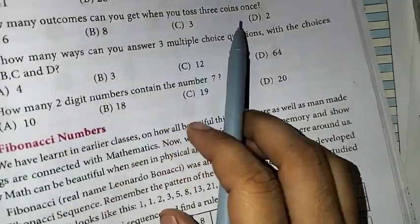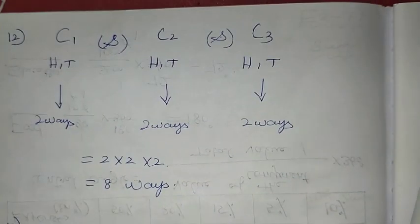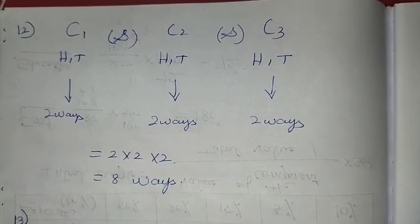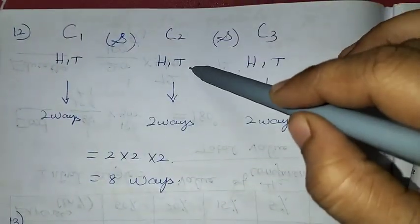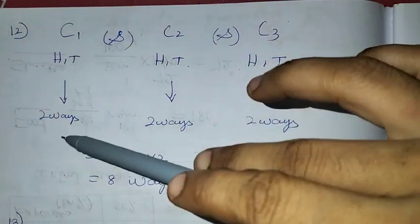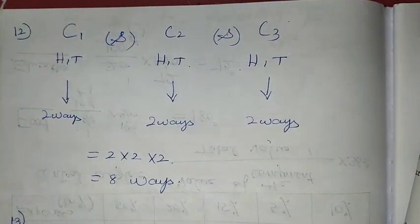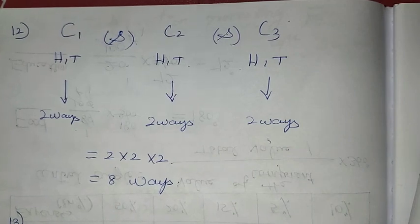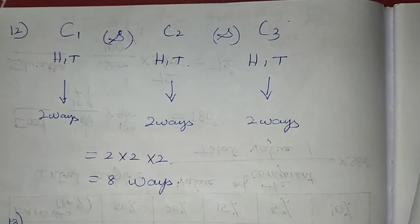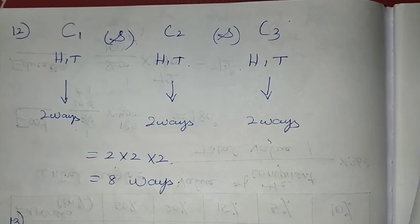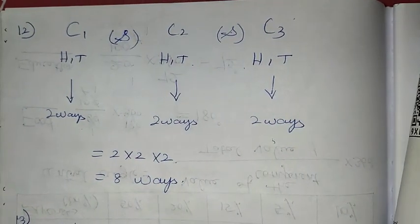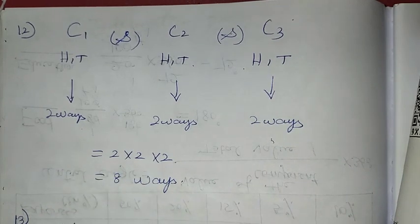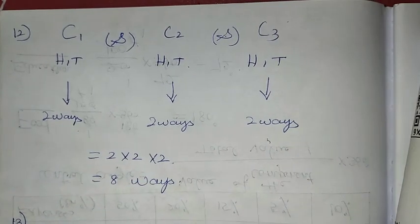How many outcomes can you get when you toss 3 coins? Each coin has 2 outcomes. Since the coins are connected — coin 1, coin 2, and coin 3 — we multiply: 2 into 2 into 2. That is 2 twos are 4, and 4 twos are 8 ways.